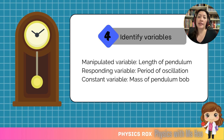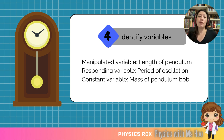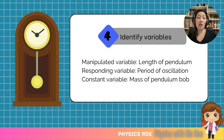The manipulated variable is the variable that we will change — in this case, the length of the pendulum. The responding variable is the value that we would measure — in this case, the period of oscillation. The constant variable is the one that we keep constant throughout the entire experiment. In most experiments, this is a variable which, if you don't keep constant, can also change the value of the responding variable. For this particular experiment, we will keep the mass of the pendulum ball constant.